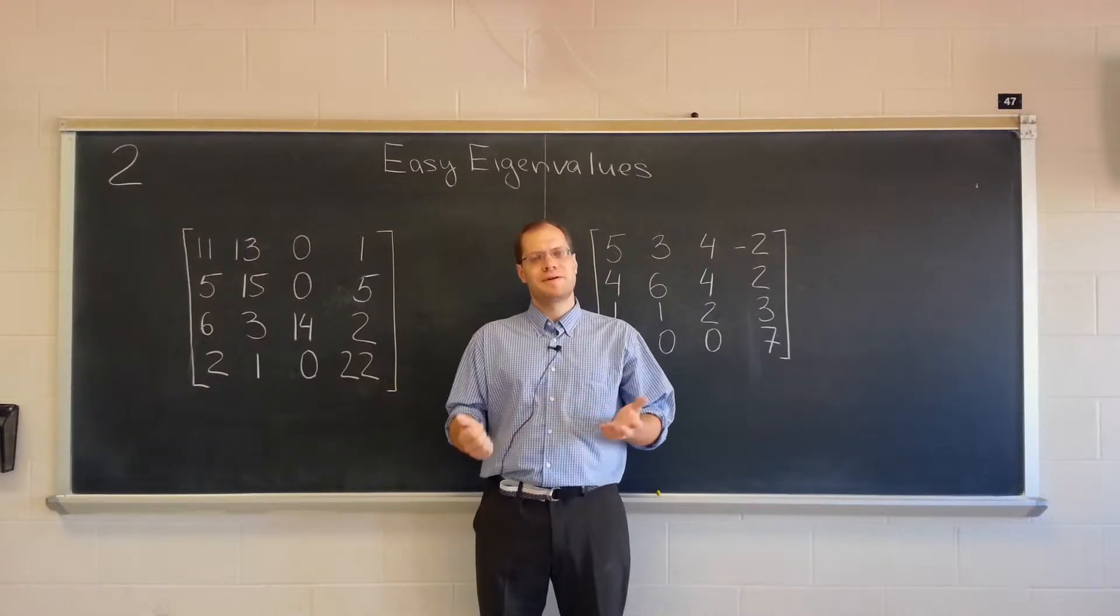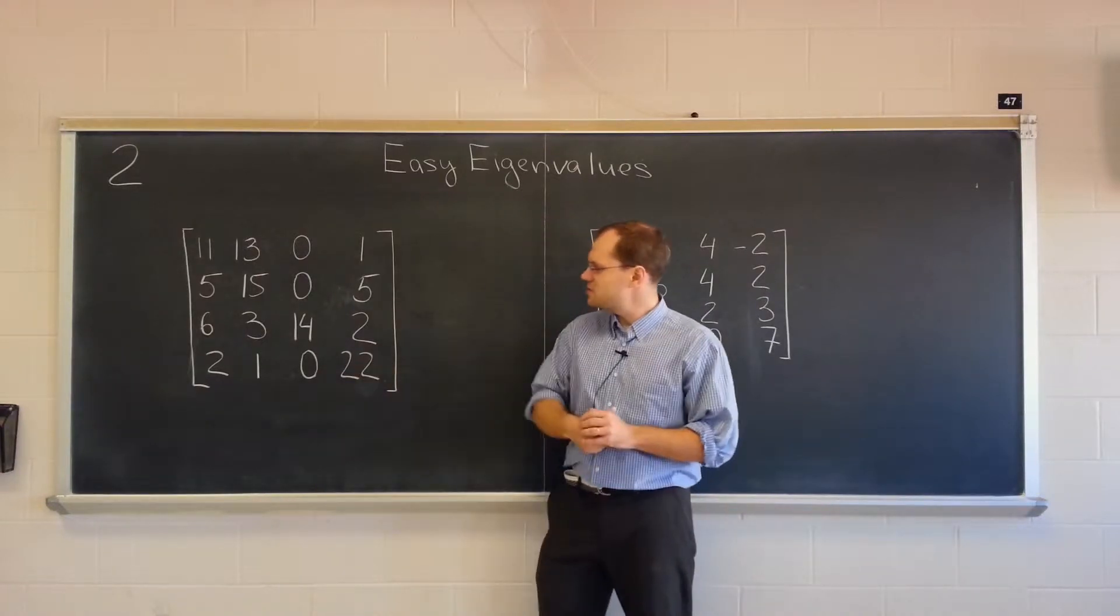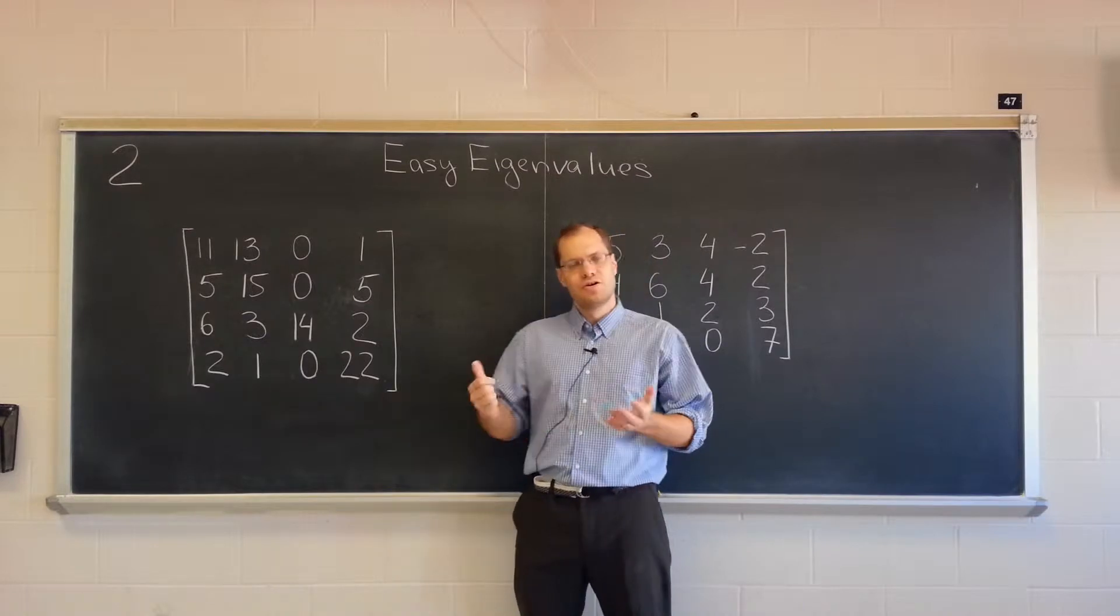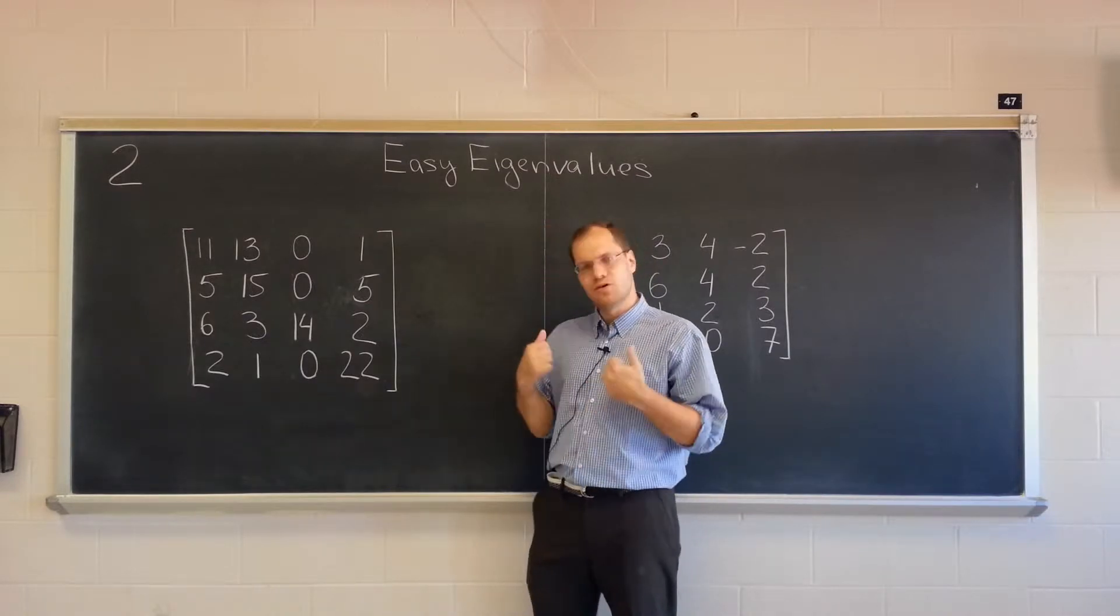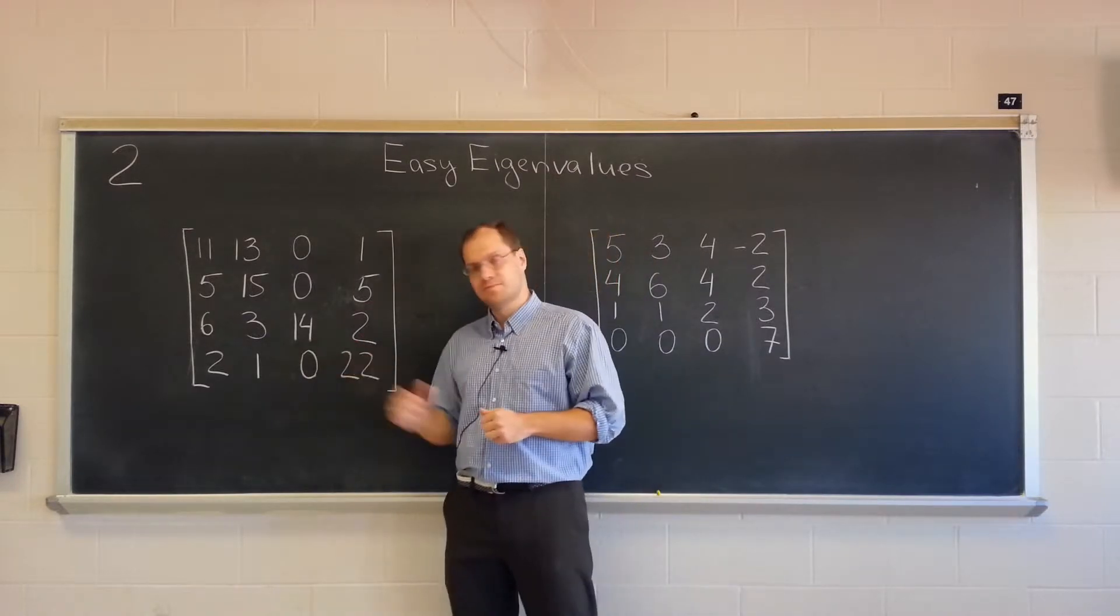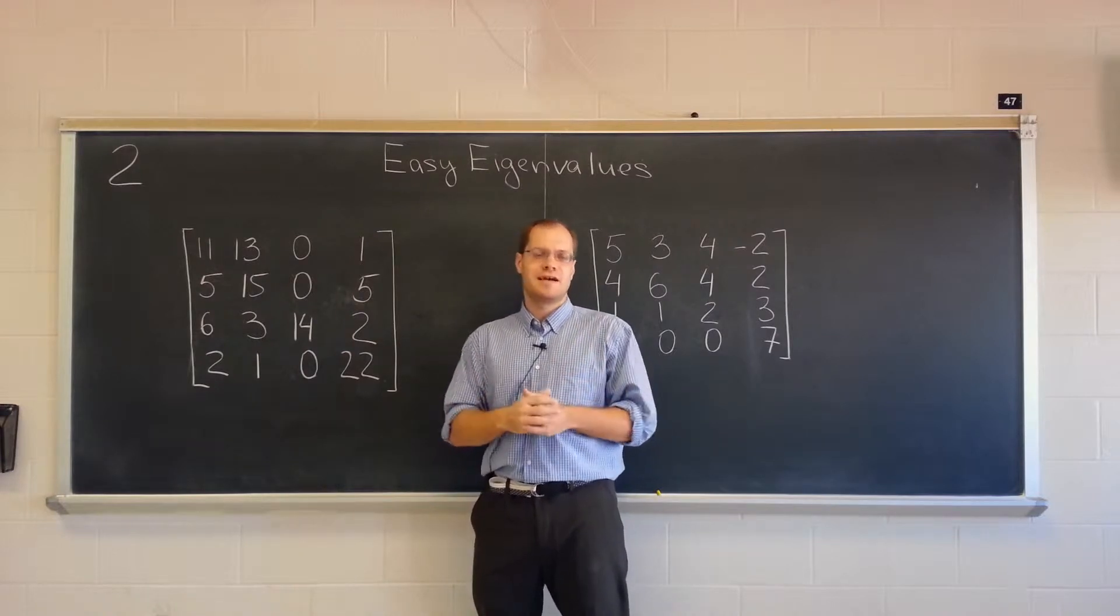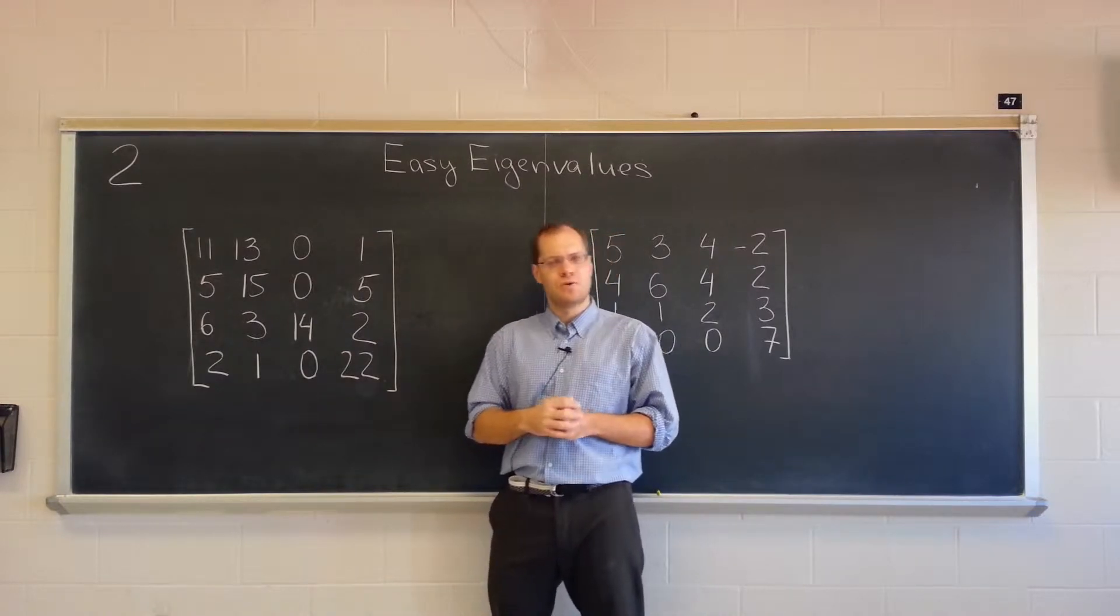Alright, let's talk about the second feature. What about this matrix? From the previous video, of course you know one of the eigenvalues is 14, and the corresponding eigenvector is [0, 0, 1, 0]. But can you see another?